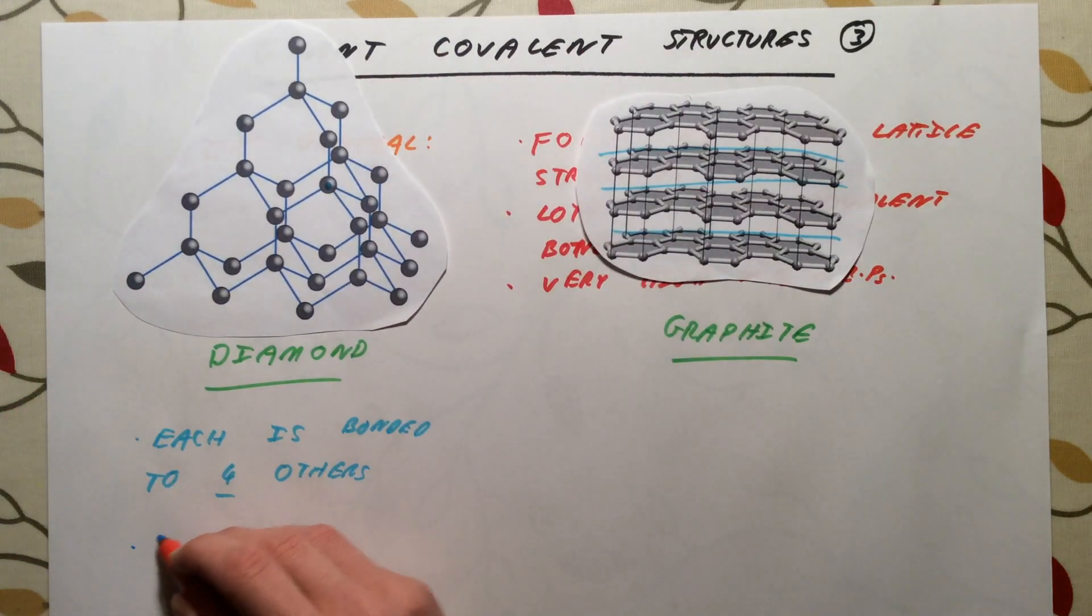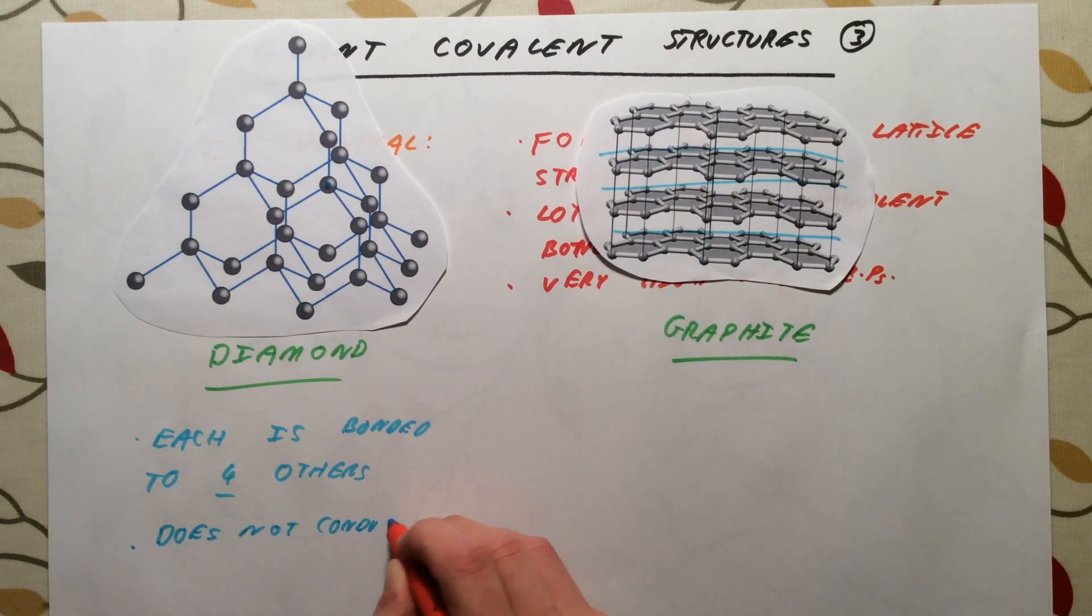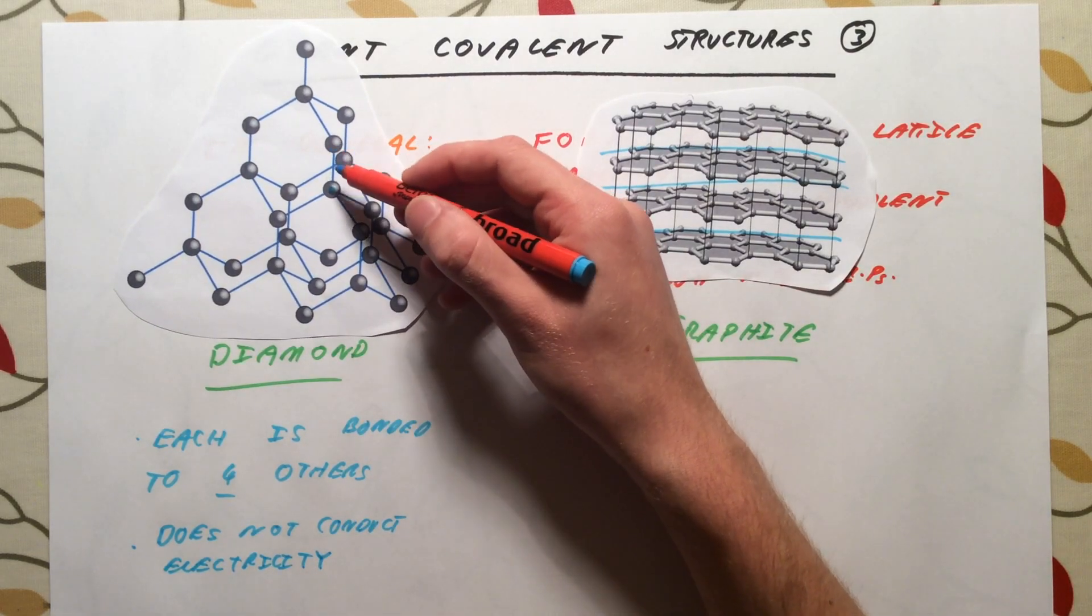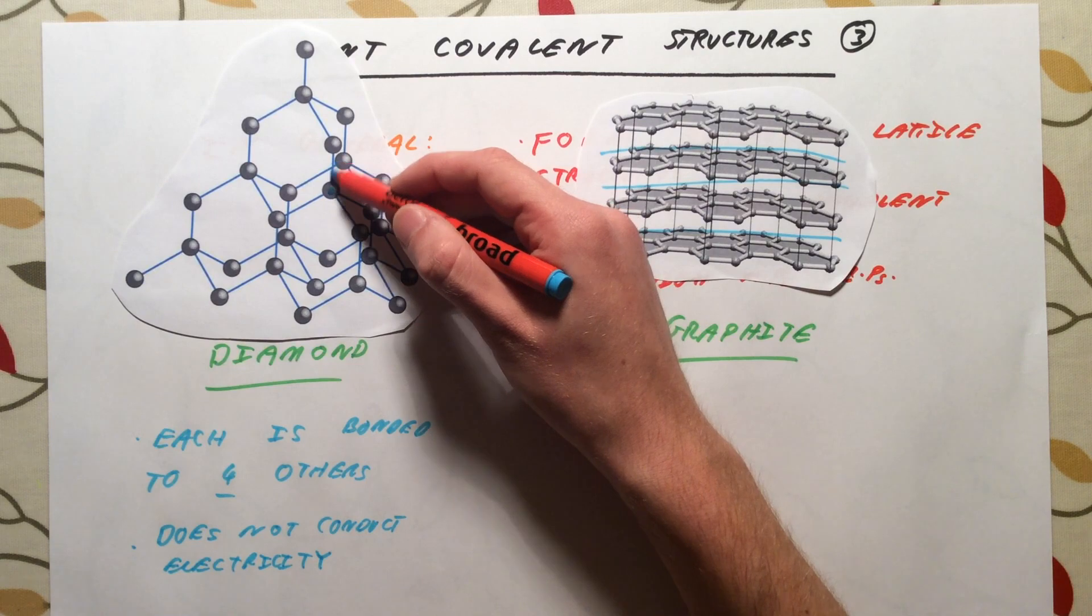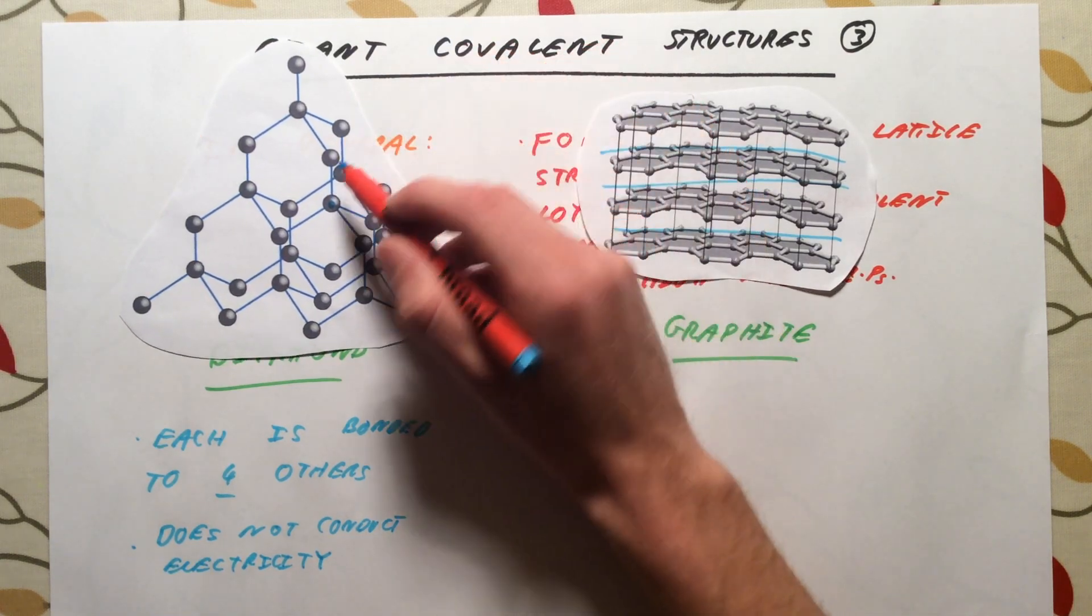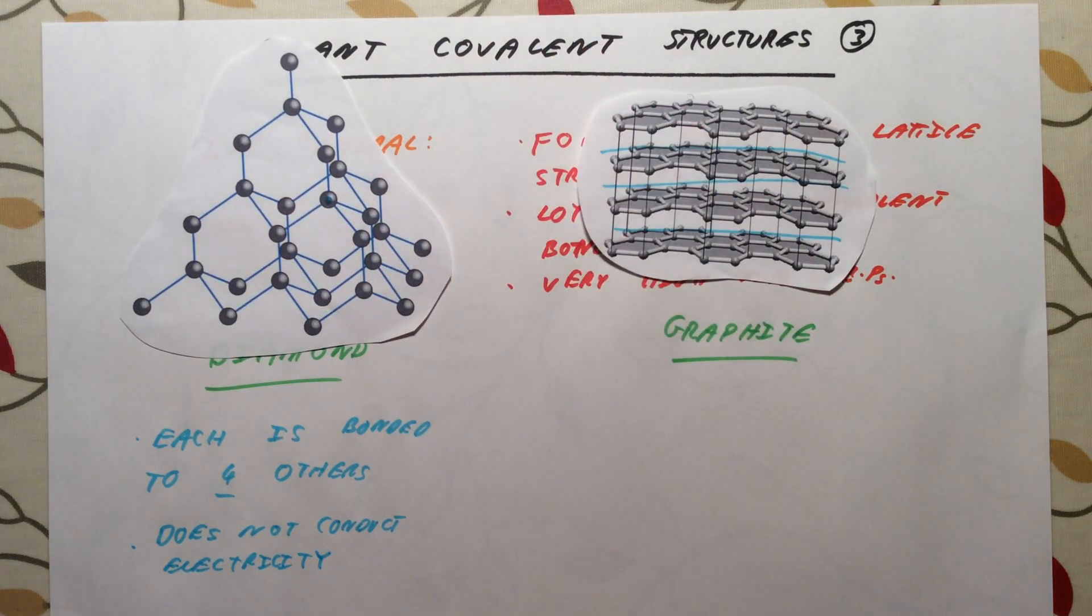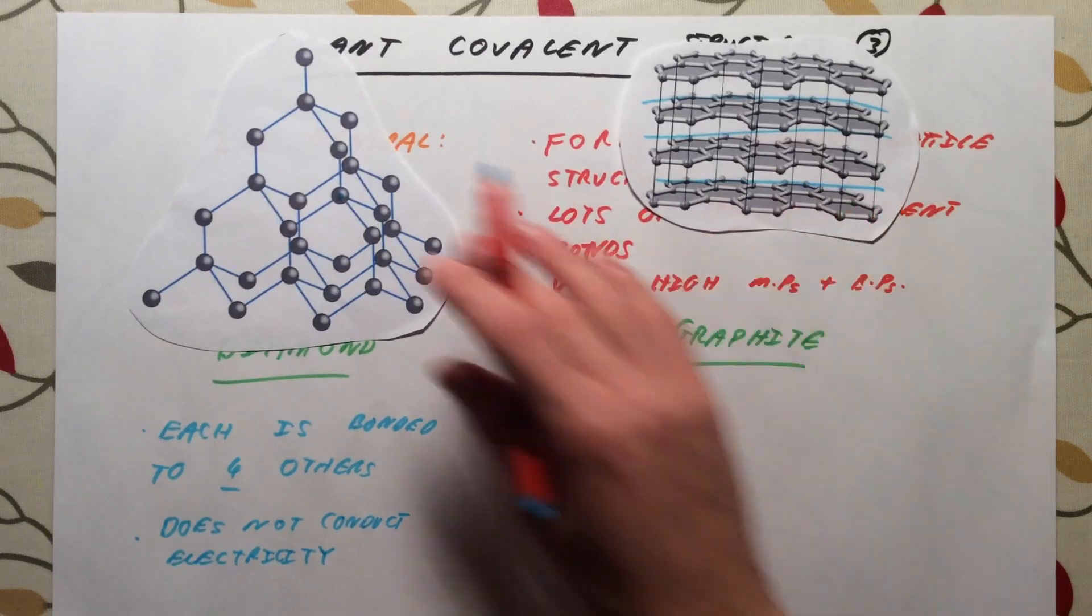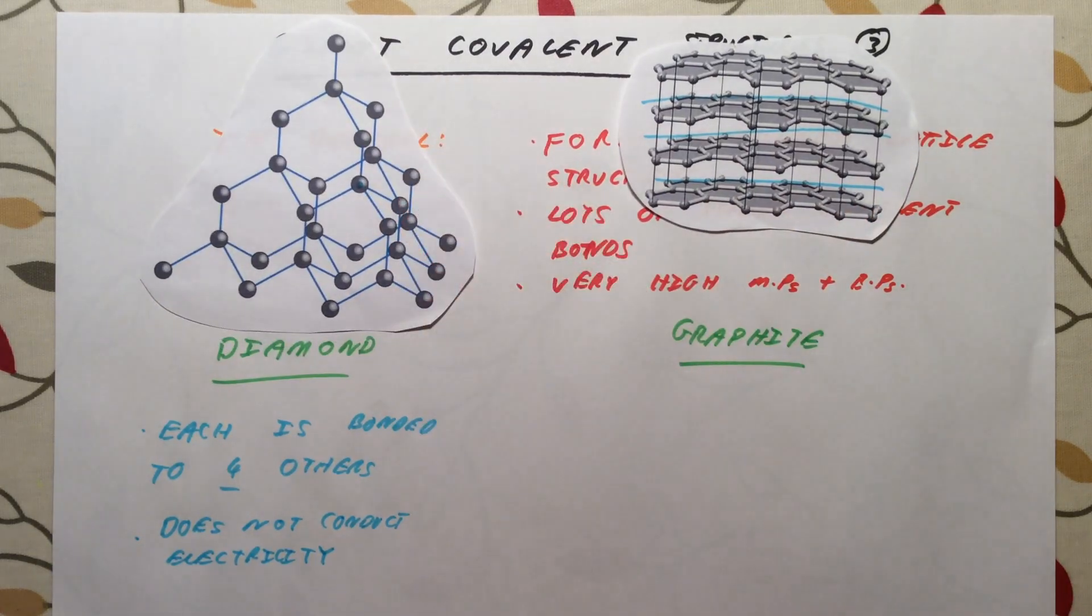Diamond does not conduct electricity. All of the electrons in the structure, all of the valence or outer electrons in the structure, are actually found in covalent bonds. There are no electrons that are free to move about, so diamond does not conduct electricity. It has a very high melting point, a very high boiling point, and it is extremely strong and resilient.